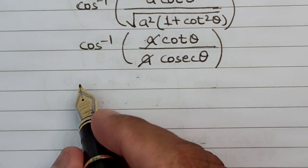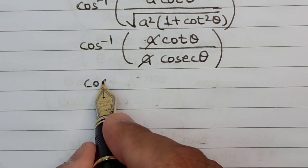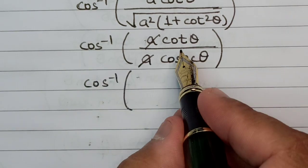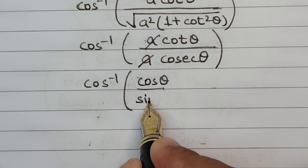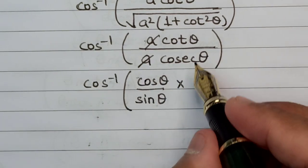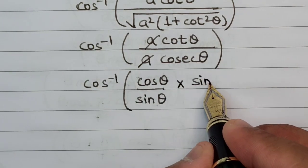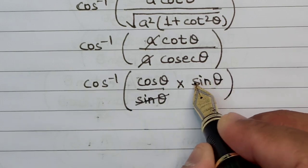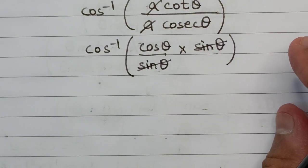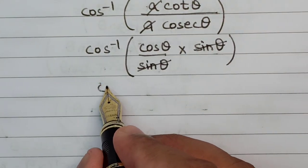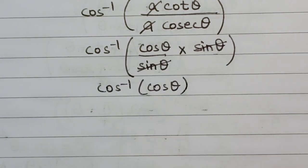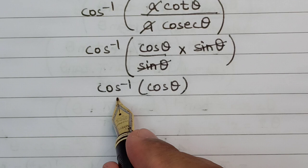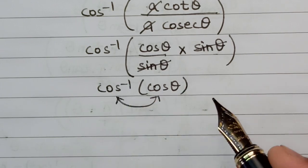Now let us convert the value of cot θ and cosec θ in terms of cos and sin. So cot θ can be written as cos θ divided by sin θ, and cosec θ is 1 upon sin θ, so sin θ and sin θ will get cancelled out. So in the last we are left with cos⁻¹(cos θ), and as I mentioned in the beginning, cos inverse and cos will get cancelled out.